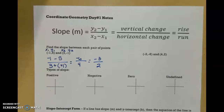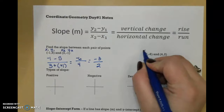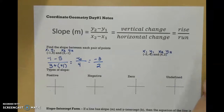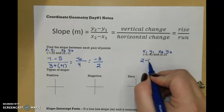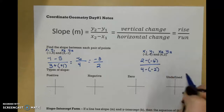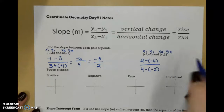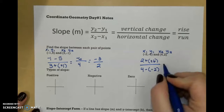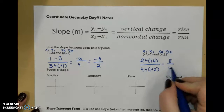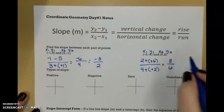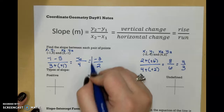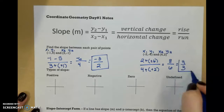Let's do it again. I'm going to label my x1, y1 and x2, y2 and plug it into my formula. So 2 minus negative 6 over 4 minus negative 2. When I subtract a negative, it becomes plus plus. So that is 8 over 6. And I do want it in simplest terms, so that is going to be 4 over 3.